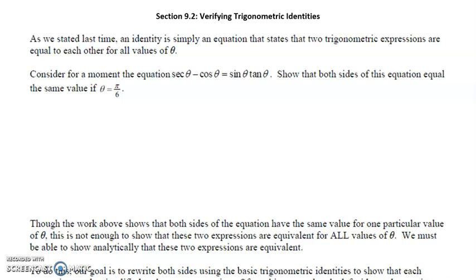We're going to start our final section of the year — congratulations, you made it. This last section deals with trig identities we've been working with, and we're going to use these identities to verify or prove trig statements — specifically, how an expression on the left is equal to an expression on the right. We may need to use shortcuts with trig functions from the last section to prove these trigonometric equations or expressions are equal.